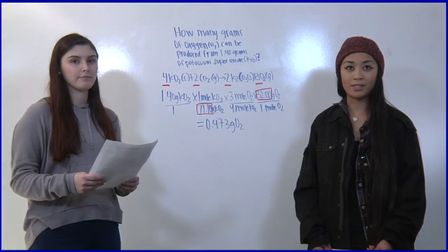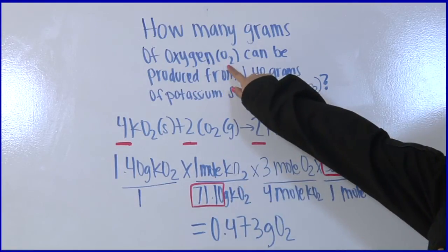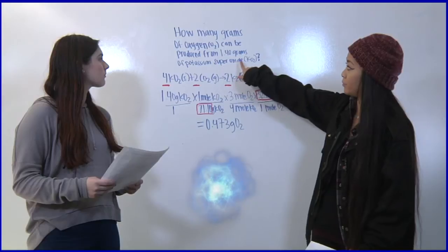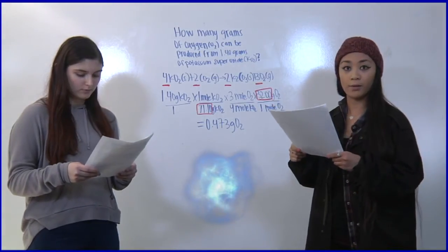Another problem where we can find the expected reactant is how many grams of oxygen O2 can be produced from 1.40 grams of potassium superoxide KO2. First we check that the equation is balanced.